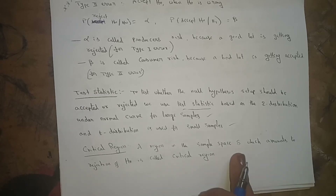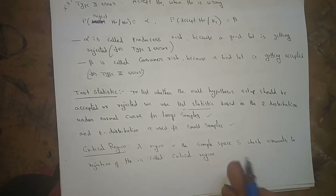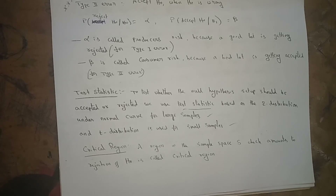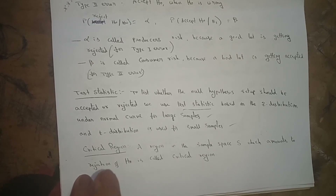Critical region: a region in the sample space S which amounts to rejection of H₀ is called the critical region. Rejection of the null hypothesis is called the critical region. While doing problems about critical region, null hypothesis, and alternative hypothesis, I will explain further. Thank you.